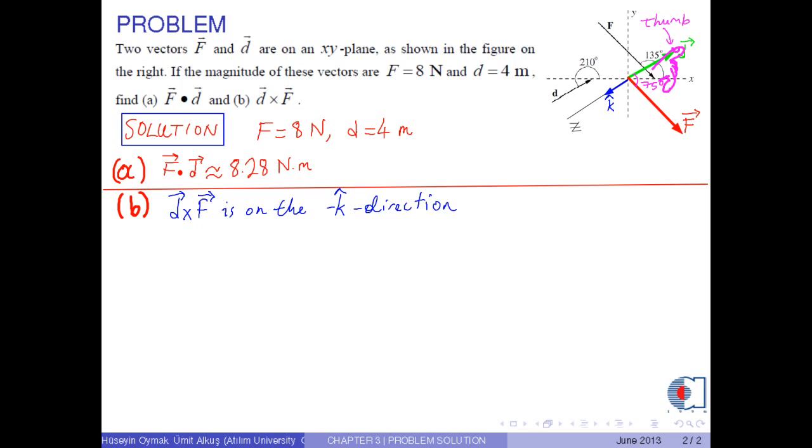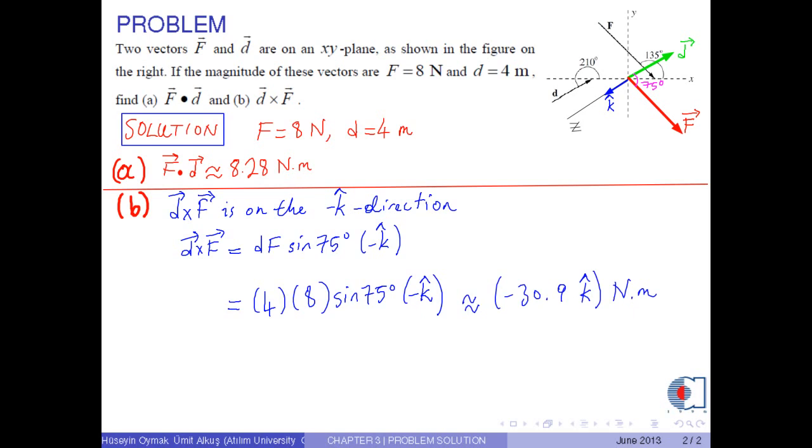Consequently, d cross f equals d times f times sine 75 degrees minus k-hat. If we put the corresponding numerical values into this equation, that is, 4 times 8 times sine 75 degrees minus k-hat, we obtain approximately negative 30.90 newtons times meters.